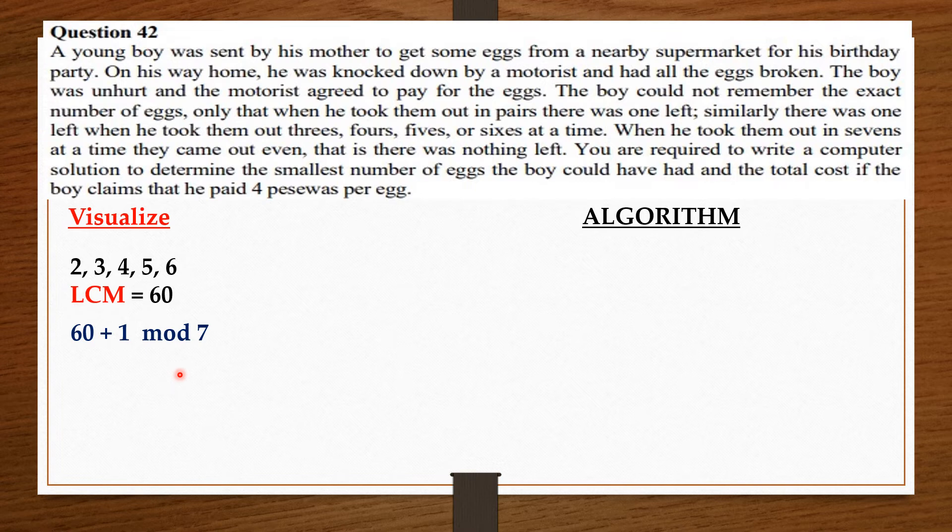As we go along, what this turns out to be is that we are going to get a general formula, which is 60x plus 1 modulo 7. So, we are looking for the value of x that is going to give us a number that leaves a remainder of 0 when 7 goes into it.